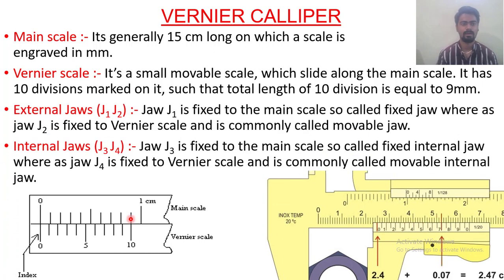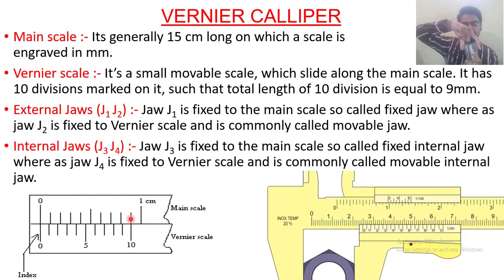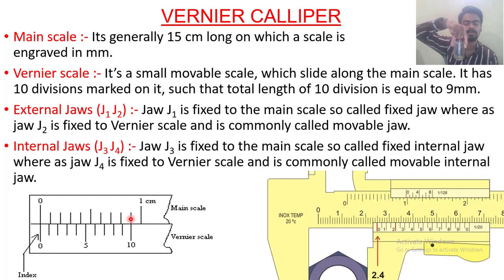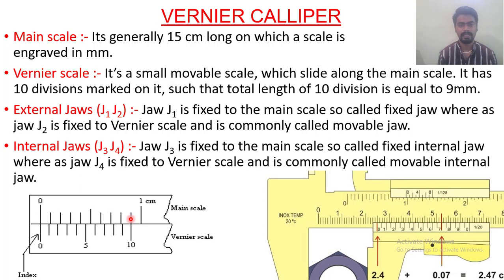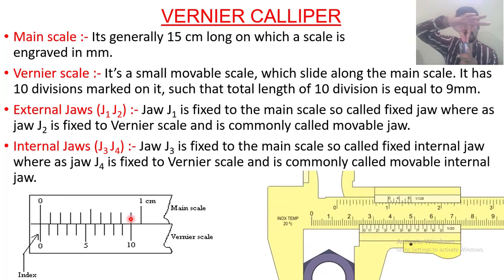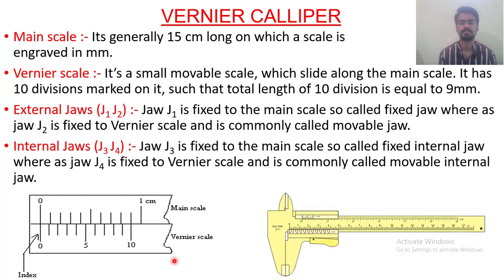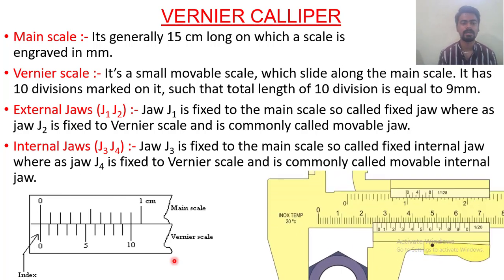Next are the external jaw and internal jaw. For example, if I want to measure the length of a glass, with the help of the external jaws J1 and J2 I can fix the two jaws and measure the diameter of the glass. If I use the internal jaws J3 and J4, that will help us measure the inner diameter of the glass. Jaw J1 is fixed to the main scale and is known as the fixed jaw; J2 is fixed to the Vernier scale and is known as the movable jaw. Similarly, J3 and J4 are the internal jaws.